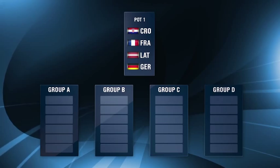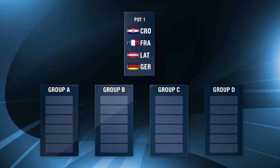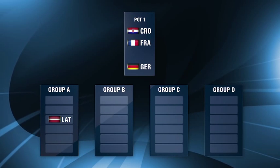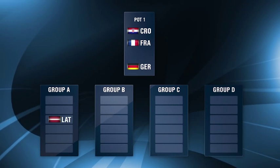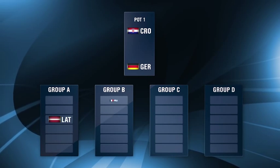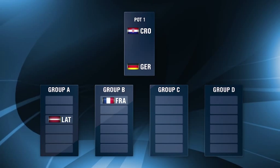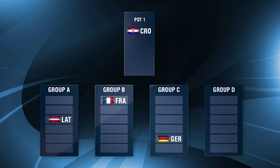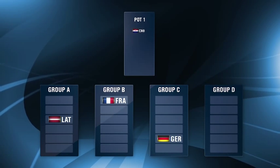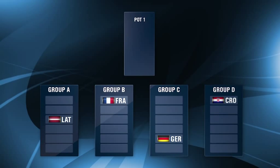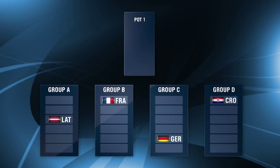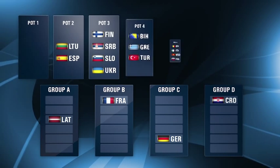For example, if Latvia is drawn first out of the host country pot and is placed in Group A in the third seed position, France is drawn in Group B in the first seed position, Germany in Group C in the fifth seed and Croatia in Group D in the first seed.